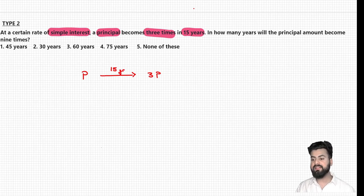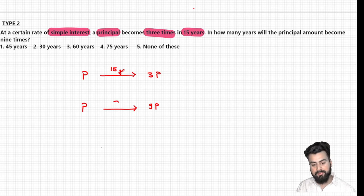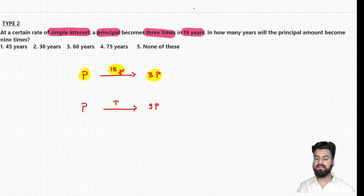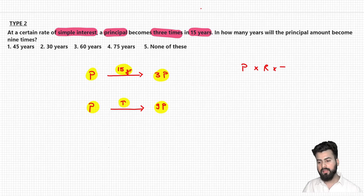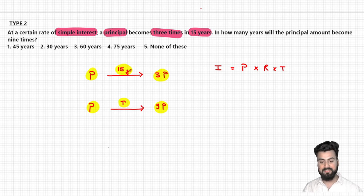The question is: in how many years will the same principal amount change to nine times — that is, 9P? So we have to find out the value of time. If principal P changes to 3P in 15 years, in how many years will the same principal change to nine times? In case of simple interest, when we use the three factors — principal, rate, and time — and multiply them, we get the value of interest.